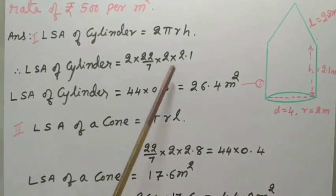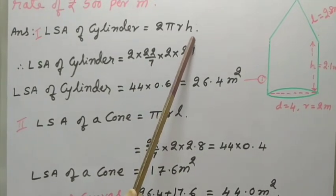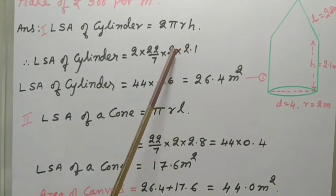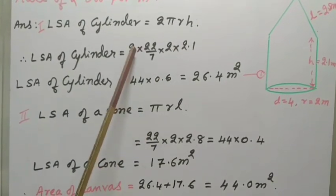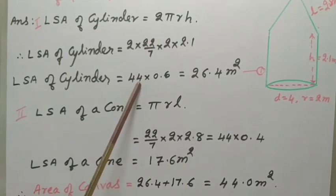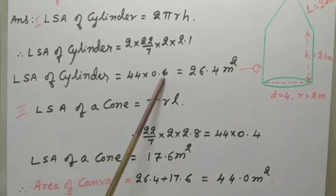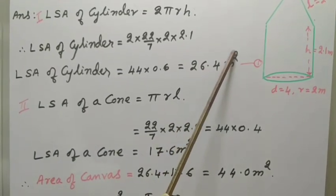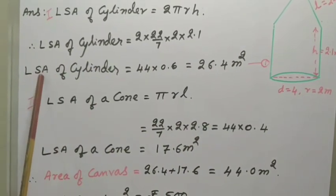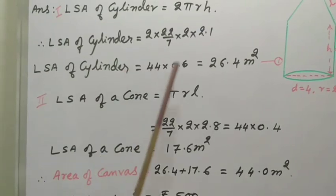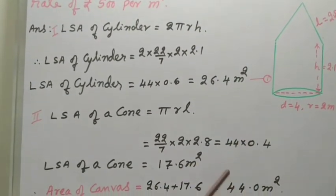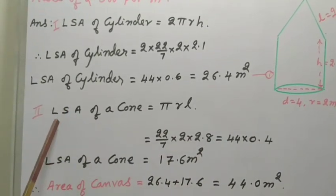So, 7 into 3, then you can put the point, 0.3 into 2, 0.6, 2 into 22, 44. Multiply these two, you will get 26.4m², that is lateral surface area of cylinder, only area of this part, not the floor, not the top.